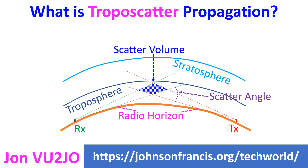Troposcatter may work from frequencies as low as 144 MHz up to 10 GHz, and useful communication can occur from 100 km to 700 km.